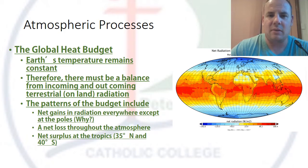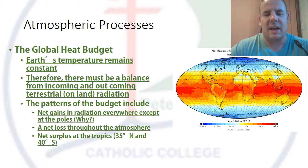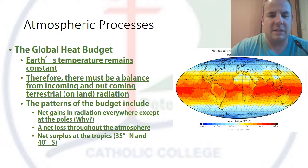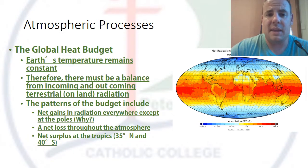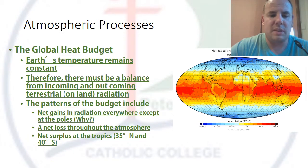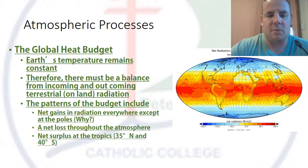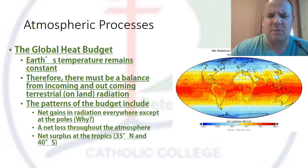Basically, the budget is a set amount of ins and outs. At the poles, we don't get a net gain of radiation — net gains are around the equator, but overall there's a net loss throughout the atmosphere. The surplus is at the tropics, roughly 35 degrees north and 40 degrees south.